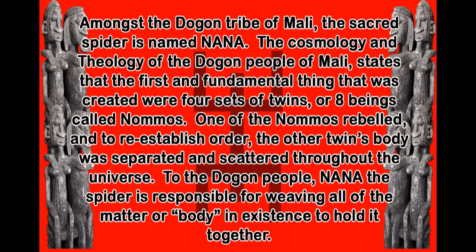Amongst the Dogon tribe of Mali, the sacred spider is named Nana. The cosmology and theology of the Dogon people states that the first and fundamental things created were four sets of twins, or eight beings, called the Nommo. One of the Nommo rebelled, and to re-establish order, the other Nommo twin's body was separated and scattered throughout the universe. Nana the Spider is responsible for weaving all the matter, or body, of existence to hold it together.